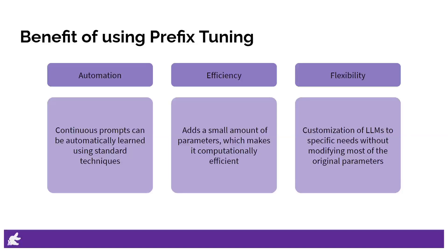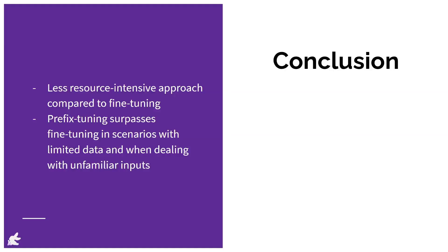Another notable advantage is that prefix tuning can work well with low-resource privacy data. We can optimize a different prefix for a different subset of privacy data and still achieve a certain amount of performance, as the trainable weight is limited. Prefix tuning is a less resource-intensive approach compared to fine-tuning — instead of modifying the entire model, it adds a trainable continuous prefix specifically for natural language generation tasks. Even though prefix tuning learns significantly fewer parameters than fine-tuning, it achieves similar performance when provided with abundant data, and surpasses fine-tuning in scenarios with limited data and when dealing with unfamiliar inputs.